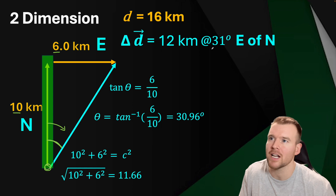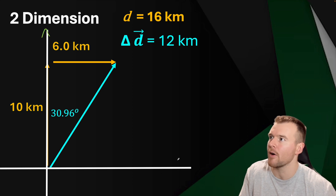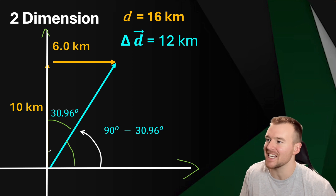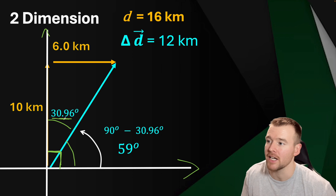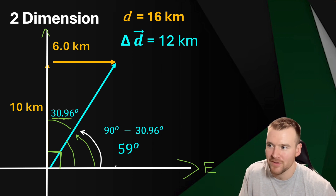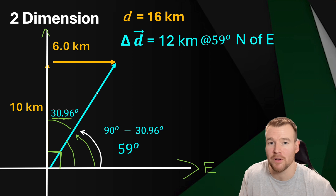It's also possible to describe the angle differently and still be correct. Instead of referencing north, you can reference east. Taking 90 degrees from east to north, minus the 30.96, gives 59 degrees. So this same direction can be described as 59 degrees north of east. Both 31 degrees east of north and 59 degrees north of east are completely fine answers.